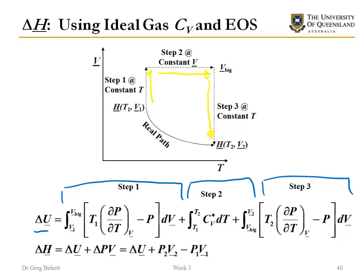To calculate delta H, the new bit is adding on this delta PV. And so all that is is just the pressure and the volume at the end point, so at T2V2, and then the pressure and the volume at the initial point, so T1V1. Since we either know the pressure or the volume and can figure out what the other one is, that's quite a straightforward thing to calculate.